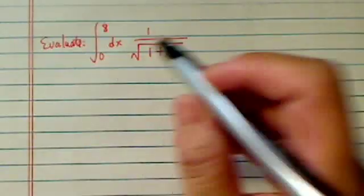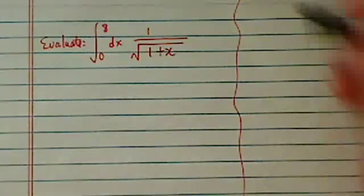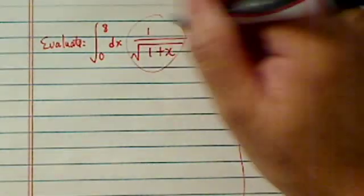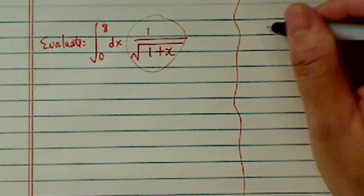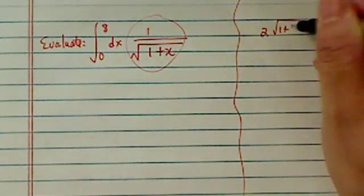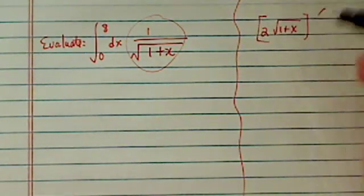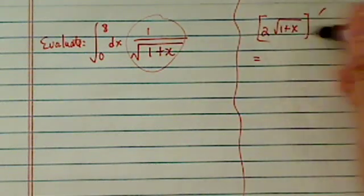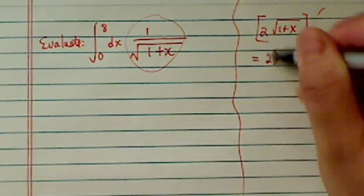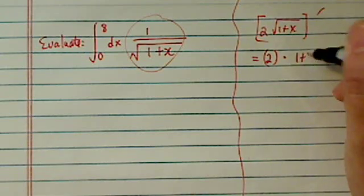This is one of the really interesting problems. If you take a look at this one, we want to find an antiderivative. If we take a derivative of 2, 1 plus x, you'll see this one actually equal to what we're trying to integrate. So the answer we know should be this one.